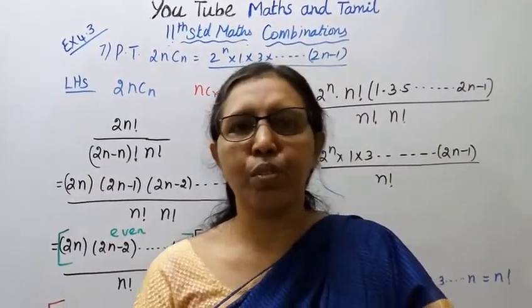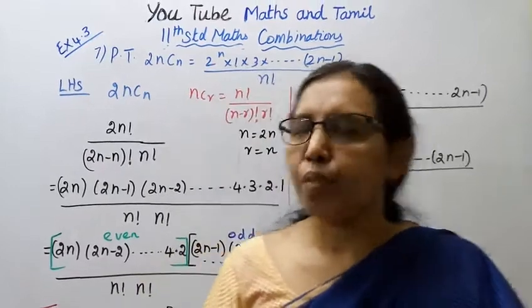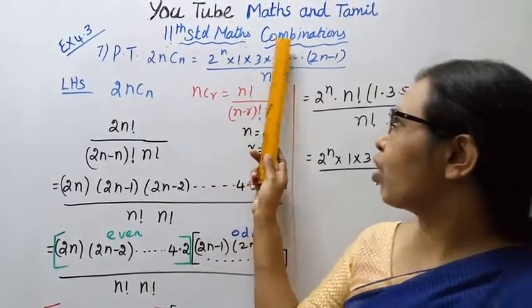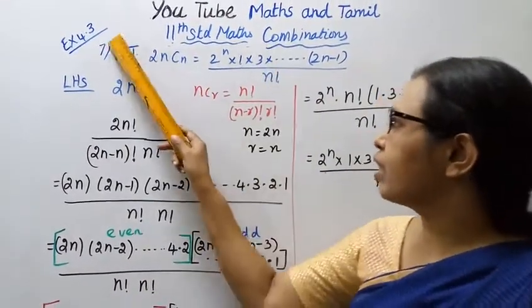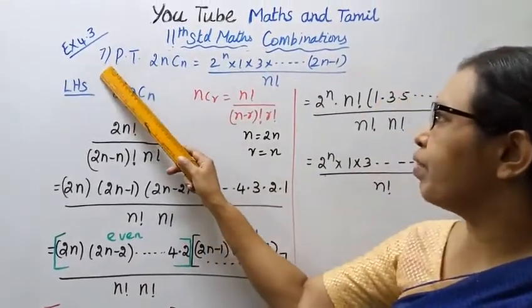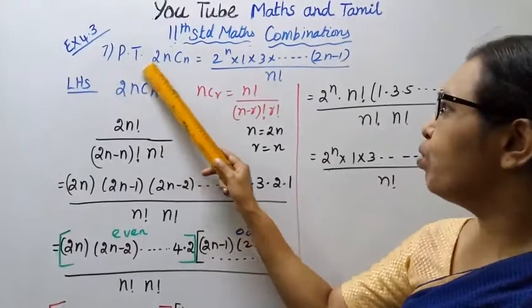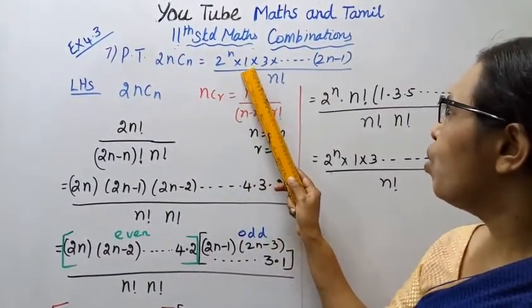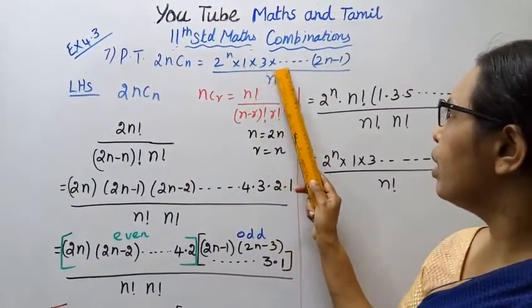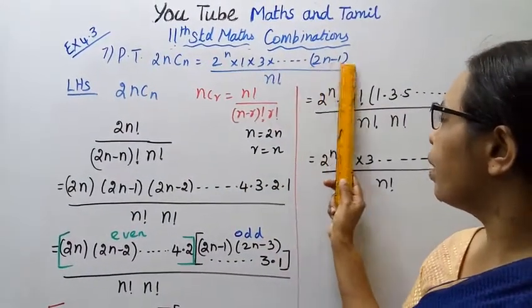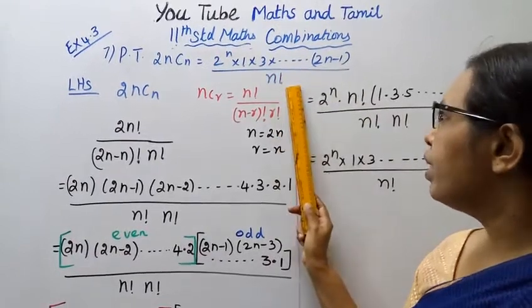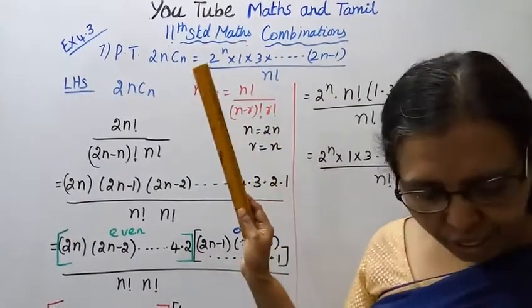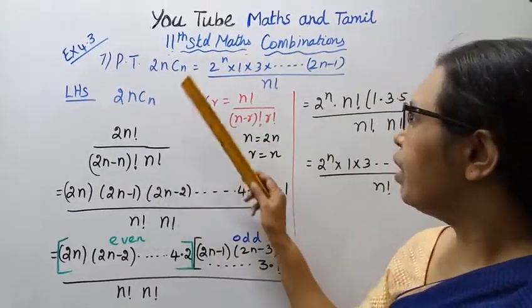Hello students, welcome to Max and Tamil channel. This is for 11th standard students — combinations exercise 4.37. We need to prove that 2nCn equals 2 power n into 1 into 3 into (2n minus 1) divided by n factorial. This is a very easy sum.